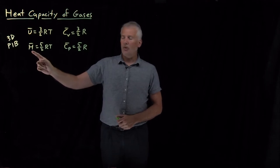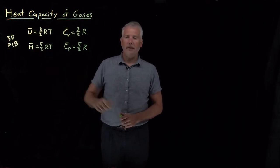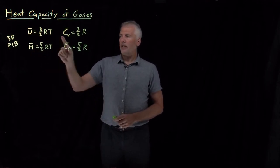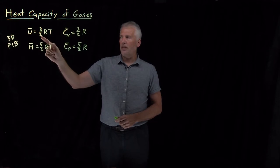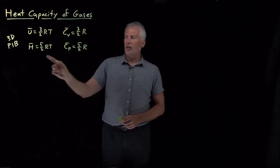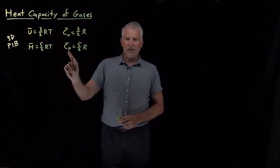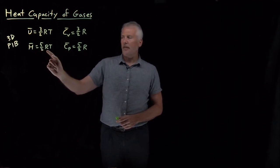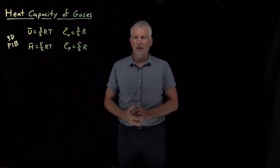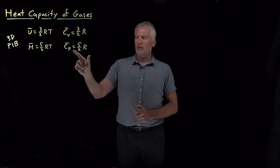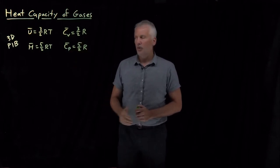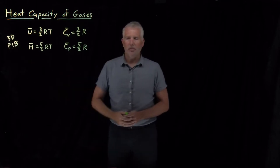The enthalpy per mole of that same gas would be 5/2 RT. If I take the derivative with respect to temperature to find the heat capacities, the constant volume heat capacity, 3/2 RT becomes 3/2 R. The constant pressure heat capacity, if I take dH/dT, 5/2 RT becomes 5/2 R. So those are the expressions for the constant volume molar heat capacity and constant pressure molar heat capacity for a gas predicted by the 3D particle-in-a-box.